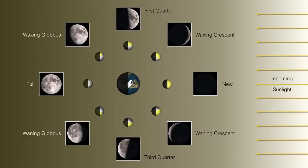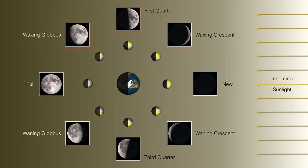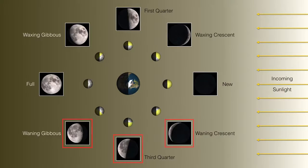The phases where the light is being added to the moon, we call those the waxing phases. Whereas when the light is being removed from the moon, we call those the waning phases. So we have waxing crescent through first quarter to waxing gibbous to full. And then we repeat the cycle but reverse it — we go from gibbous to third quarter to crescent and then back to new again.